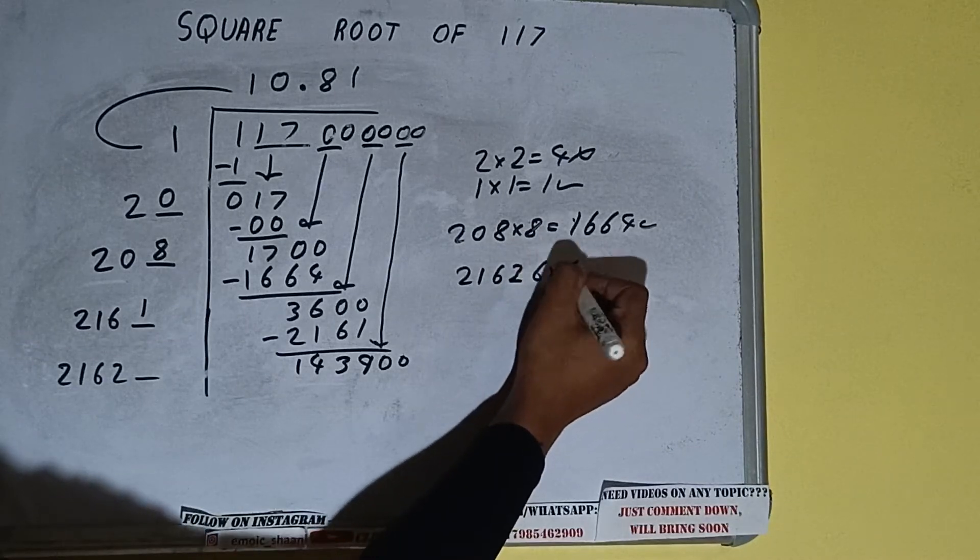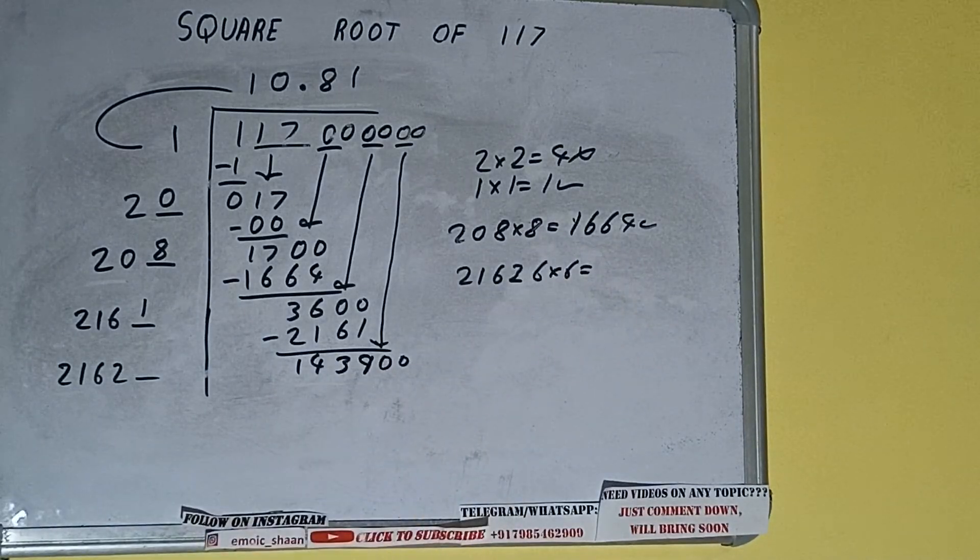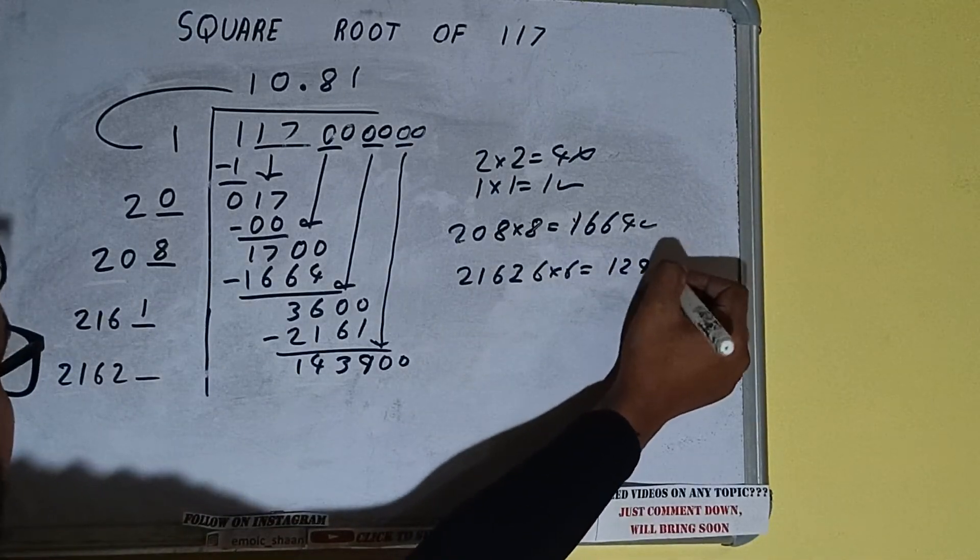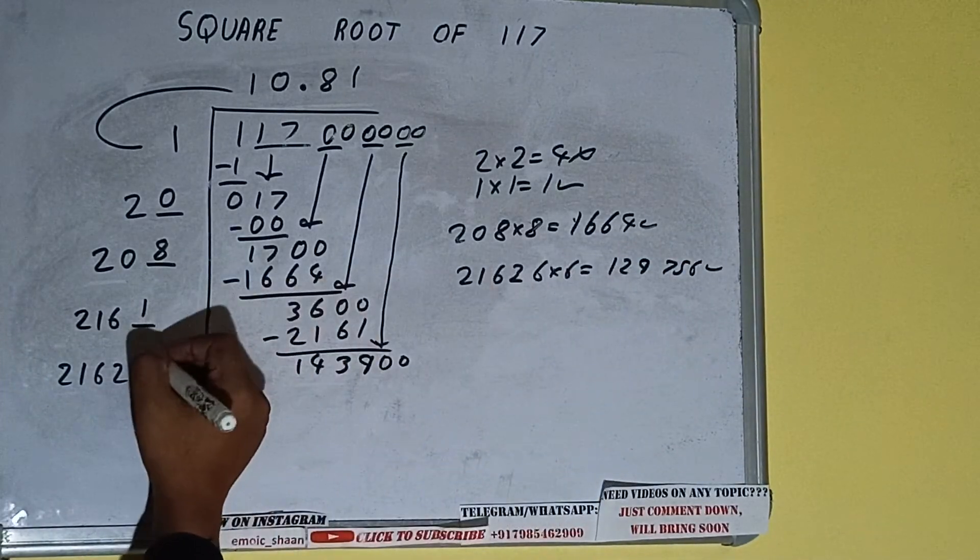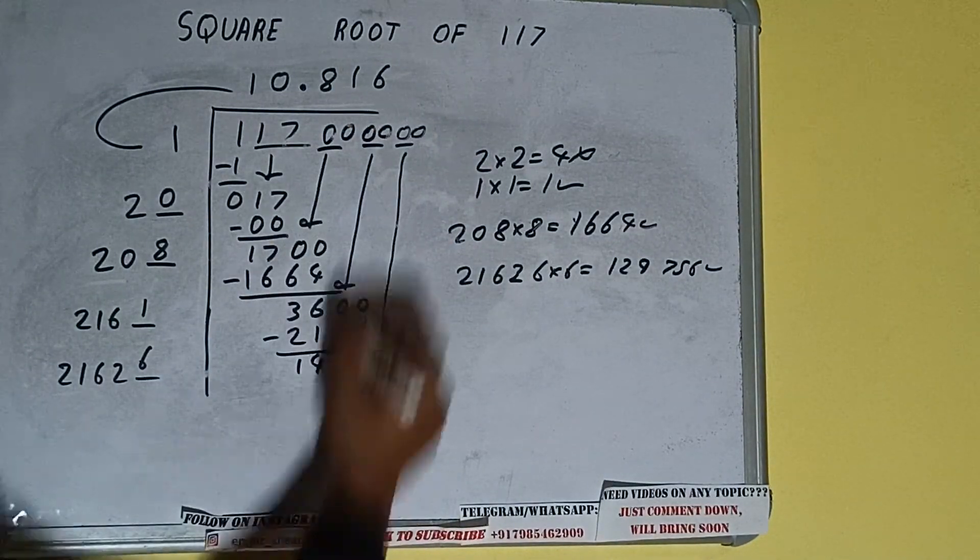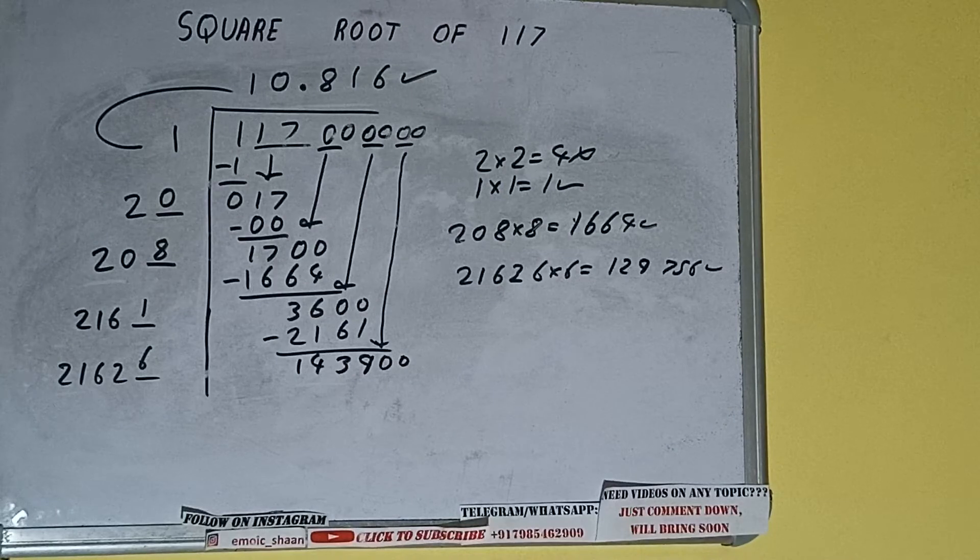2162 6 into 6 we can try. And we'll be getting 129756 which is good to take. So 6 here and 6 here. But we don't need to calculate because we got the answer correct up to 3 decimal places.